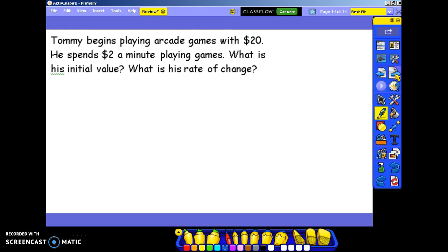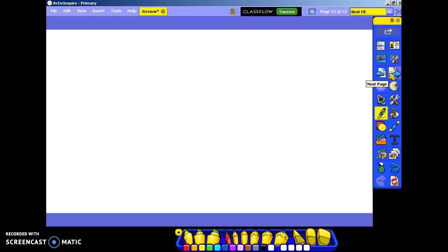And finally, we have Tommy begins playing arcade games with $20. This is his initial point or his y-intercept. He spends $2 a minute. When you have a minute or per something, that's going to be your slope. What is his initial value? Well, his initial value is $20. What is his rate of change? His rate of change is $2. So our equation is y equals 2x plus 20, where 2 is the rate of change and 20 is his initial value. And that concludes our brief review over unit 5.